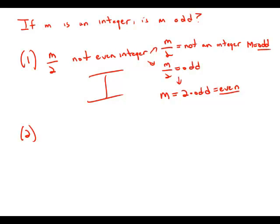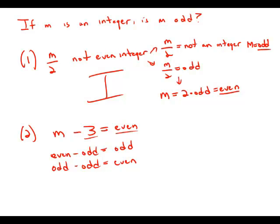So put the information of statement number one aside. Let's look at statement number two. We're told that m minus three equals an even integer. Well, we know that if we do even minus odd, that will give us odd. If we do odd minus odd, that will give us even. And here we have something minus odd equals even.